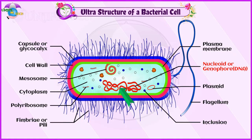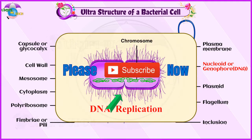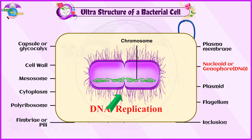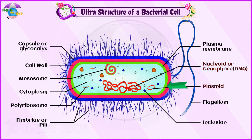The DNA is not bound to histone proteins. The single chromosome or DNA molecule is circular and at one point it is attached to the plasma membrane. It is believed that this attachment may help in the separation of two chromosomes after DNA replication.